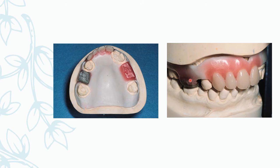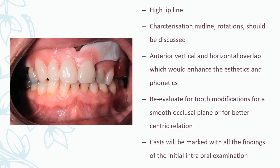The patient's aesthetic desires can be confirmed. Midline, occlusal plane, and inter-pupillary guide all have to be followed and checked. A bite is taken and anterior teeth try-in can be done. The high lip line is evaluated to arrange and set teeth accordingly. Midline, rotation, vertical and horizontal overlap — which enhances aesthetics and phonetics — must be addressed, and tooth modification for occlusal plane and centric relation is re-evaluated.